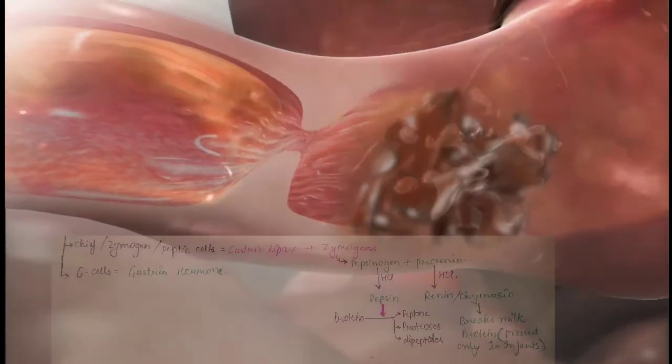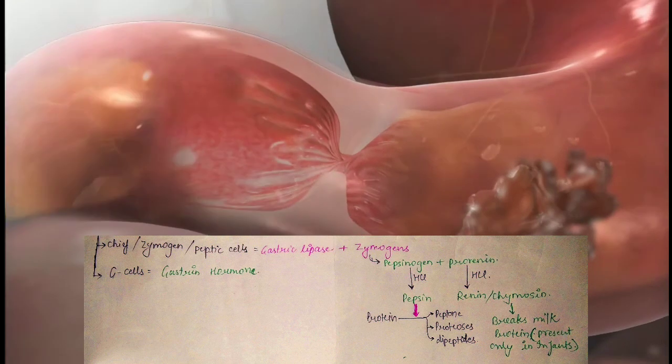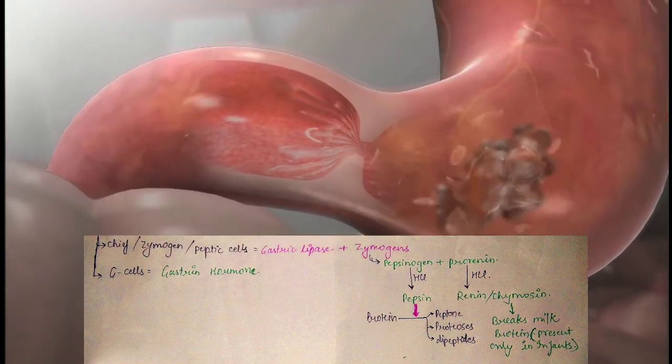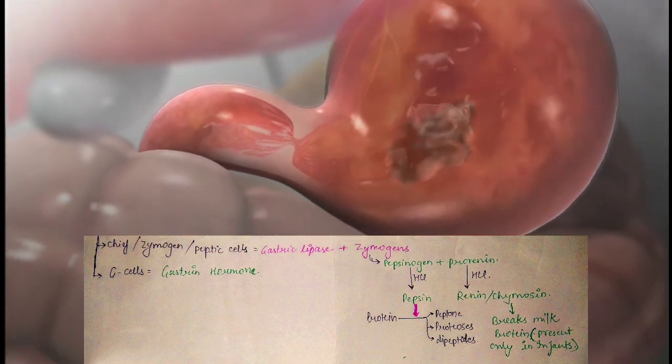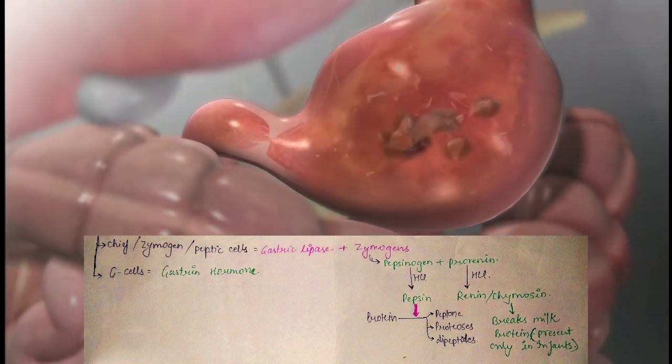The third component of gastric juice is chief, zymogen, or peptic cells. They secrete gastric lipase, which works with bile juice only, and zymogens, i.e., pepsinogen and prorennin. Zymogens get activated to pepsin and rennin or chymosin in presence of hydrochloric acid, and then break down proteins to peptones, proteoses, and peptides.